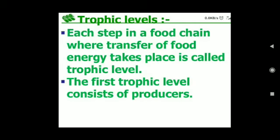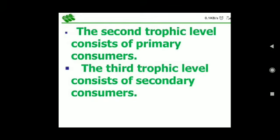Now, talking about trophic levels — each step in a food chain where transfer of food energy takes place is called a trophic level. The first trophic level consists of producers, the second trophic level consists of primary consumers, and the third trophic level consists of secondary consumers.